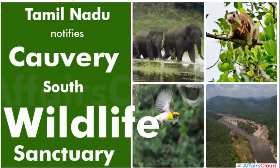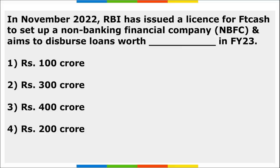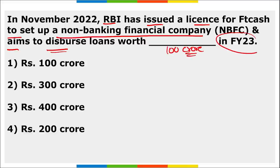Tamil Nadu has notified the Cauvery South Wildlife Sanctuary. Also remember: RBI issued a license for FT Cash to set up a non-banking financial company, which aims to disburse a loan worth 100 crore rupees in the fiscal year 2023. Correct option is option one.